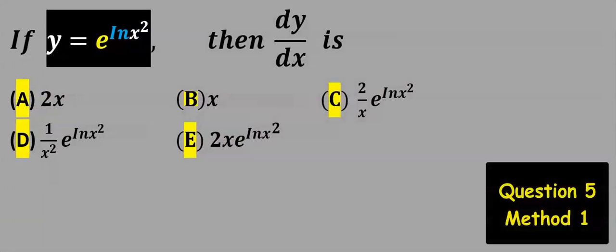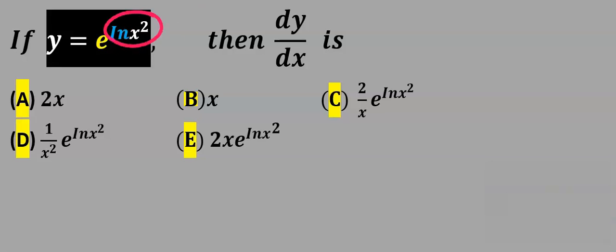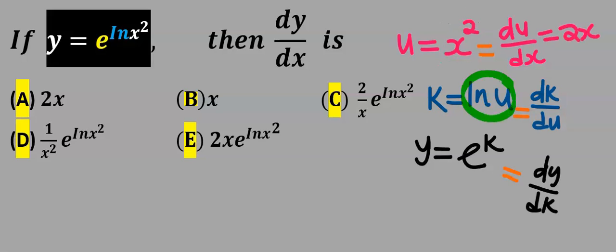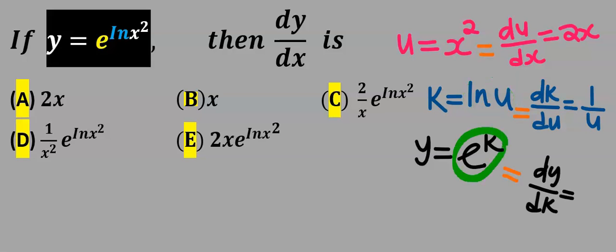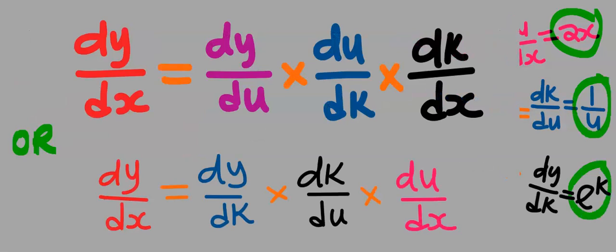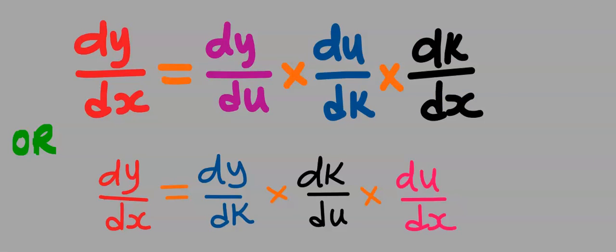Next consider this question. x² is going to be our u, ln(u) is going to be k, and y is going to be exponential k. Next, differentiate x² and you're going to get 2x. Next, differentiate the natural log of u and you're going to get 1/u. Next, differentiate exponential k and you're going to get exponential k. We're going to multiply our results according to the chain rule formula with double inner functions.